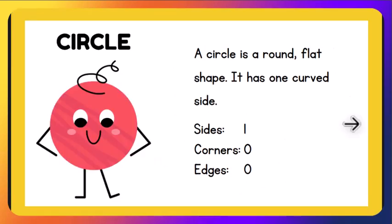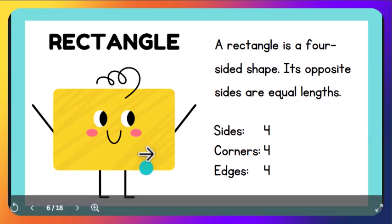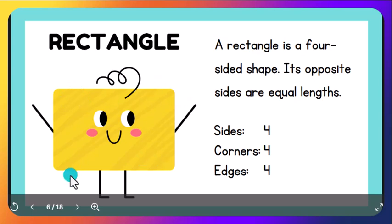Circle. A circle is a round flat shape. It has one curved side only. It doesn't have any corners or edges. Rectangle. A rectangle is a four-sided shape. Its opposite sides are equal lengths. It has four sides, four corners, and four edges.